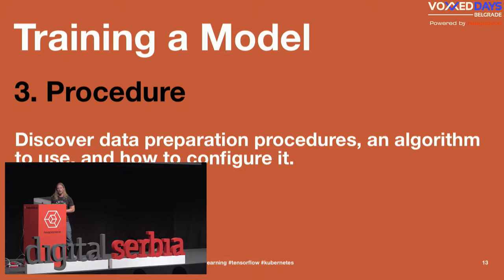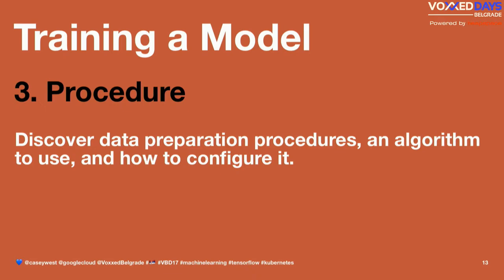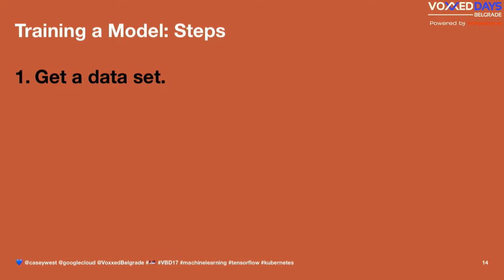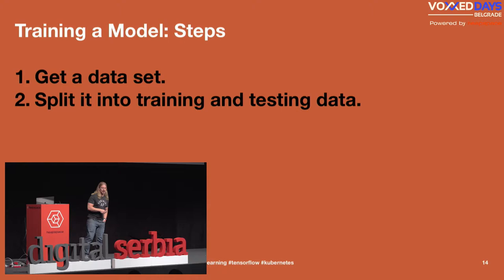This is essentially the entire software delivery lifecycle, but for machine learning models. We have to discover and prepare the information so it can be consumed, have an algorithm for understanding it, and configure the model. We start with a dataset, split it into testing and training, train the algorithm, test it with our testing data, and then ship it out to make it available and useful to our programmers.